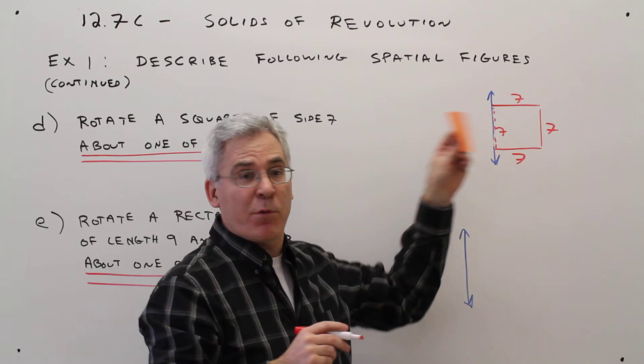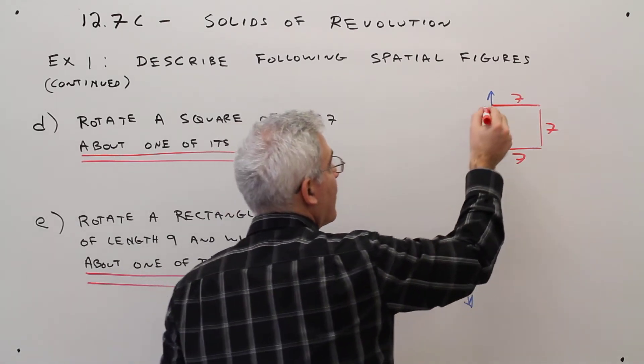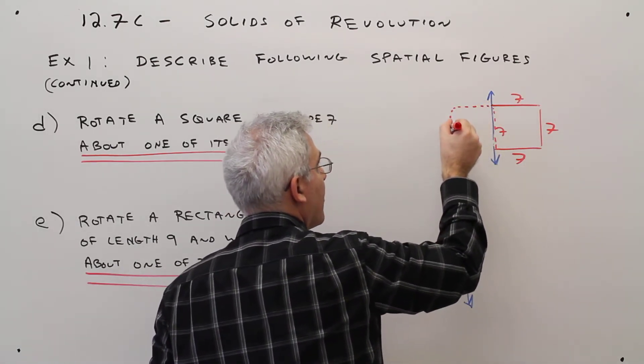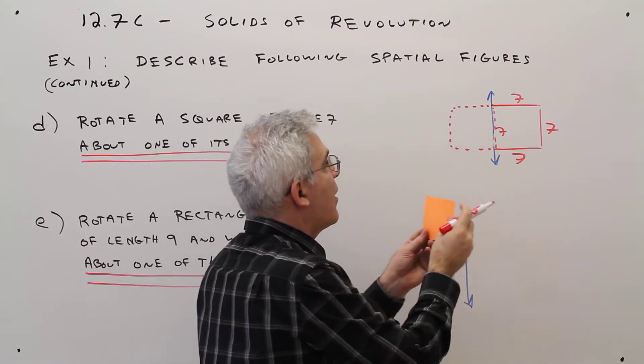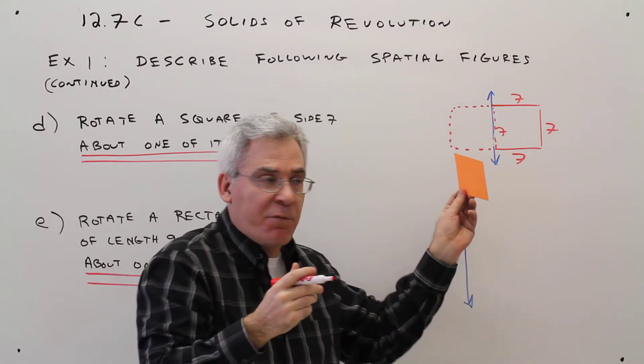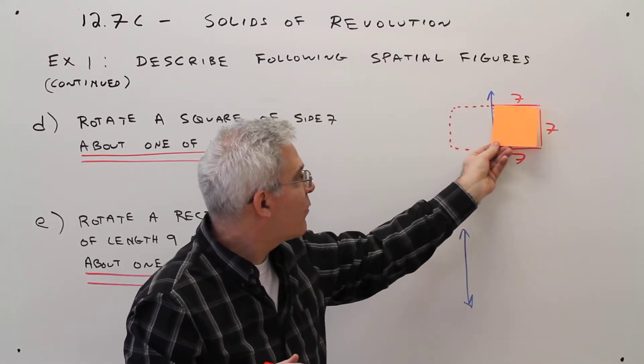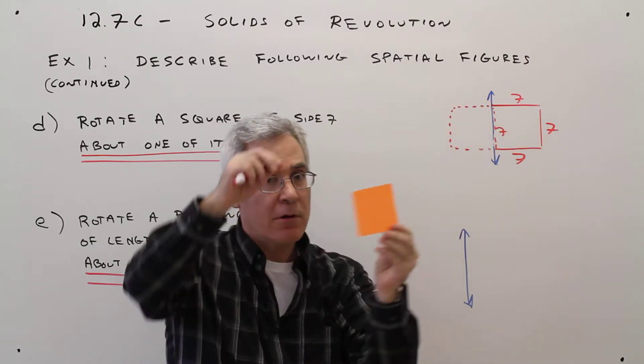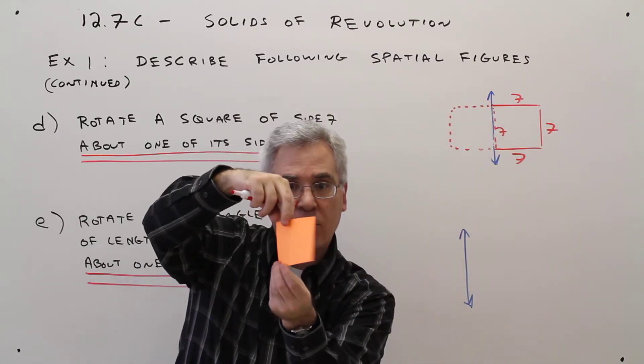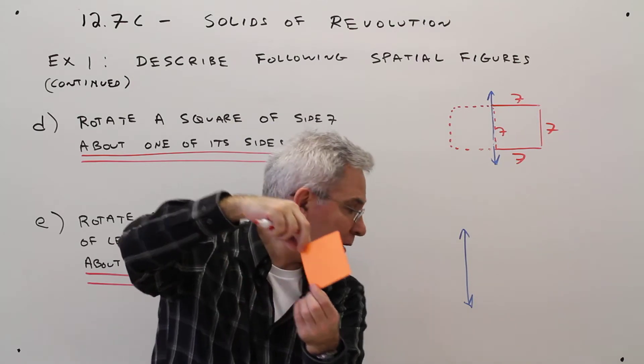And again, I find it easiest if we reflect. So if we were to reflect, and then I like to, if possible, use this. So if this thing were to be spinning around, hopefully you could visualize I would be getting a cylinder.